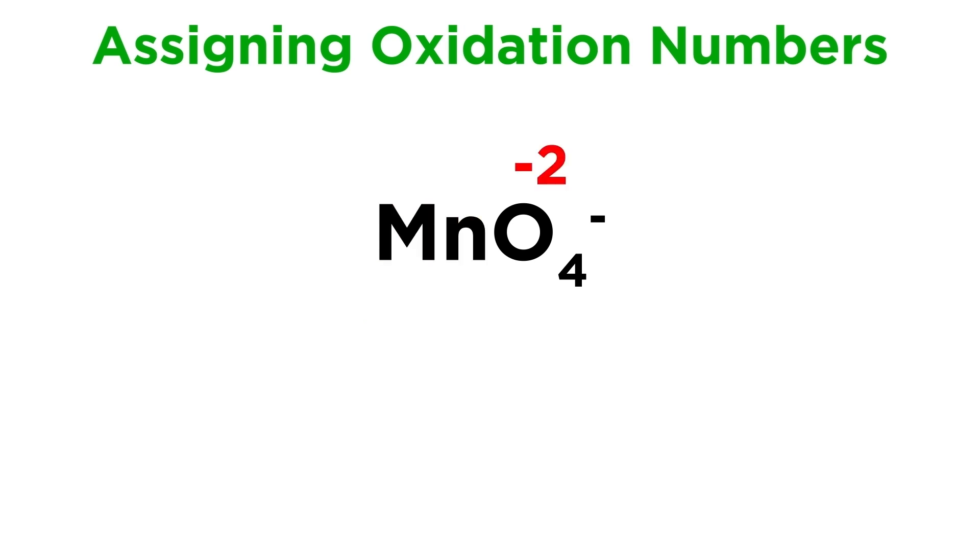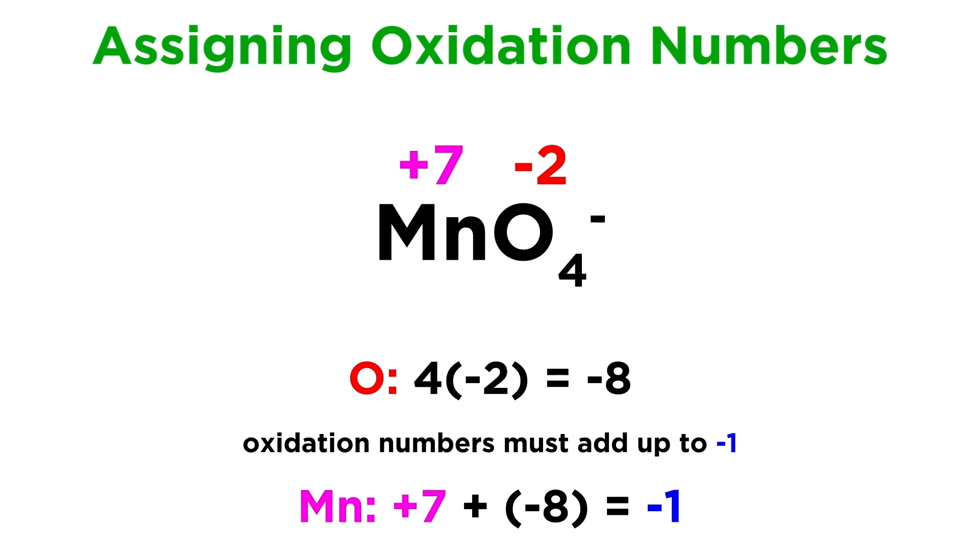Well oxygen is minus two, and there are four of them, which adds up to minus eight. The whole ion has a minus one charge, so manganese will have to be plus seven to get from minus eight to minus one.